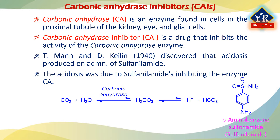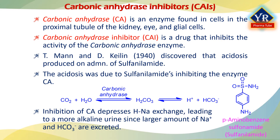Normally, all the bicarbonate ions which enter the tubular urine, that is glomerular filtrate, are reabsorbed. This occurs by means of an exchange of hydrogen ions, which the renal tubular cells secrete, for sodium ions in the tubular urine. Inhibition of the enzyme carbonic anhydrase depresses hydrogen-sodium ion exchange, leading to a more alkaline urine, since a larger amount of sodium and bicarbonate ions are excreted. Potassium ions are also excreted to a certain extent. This explained the metabolic acidosis caused clinically by the sulfonamide drug.